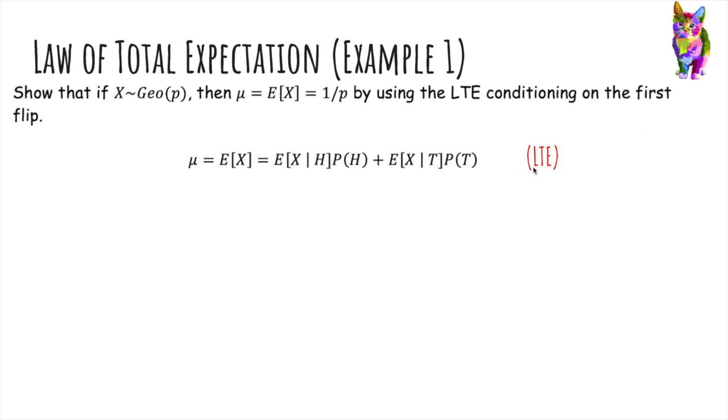Again, it looks very similar to the law of total probability. So the probability of heads and the probability of tails is p and 1 minus p. Those are the easy ones.